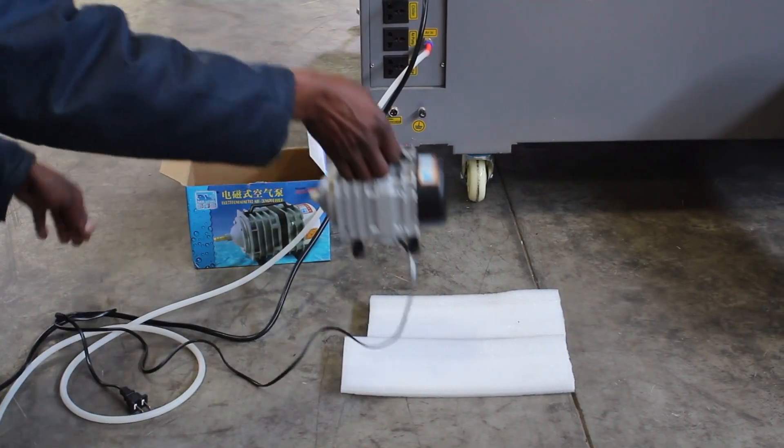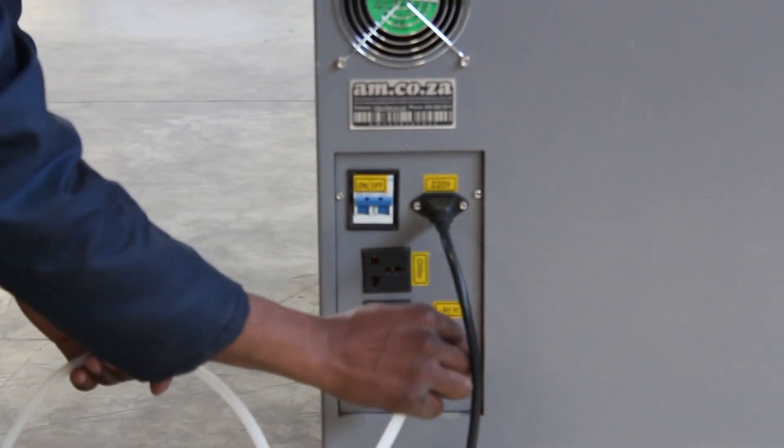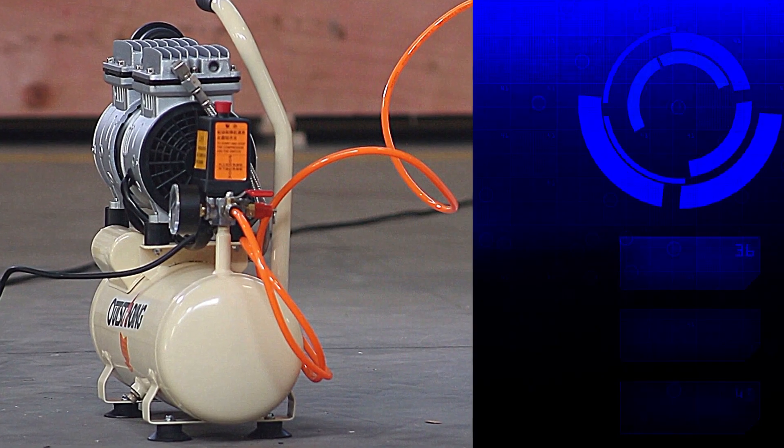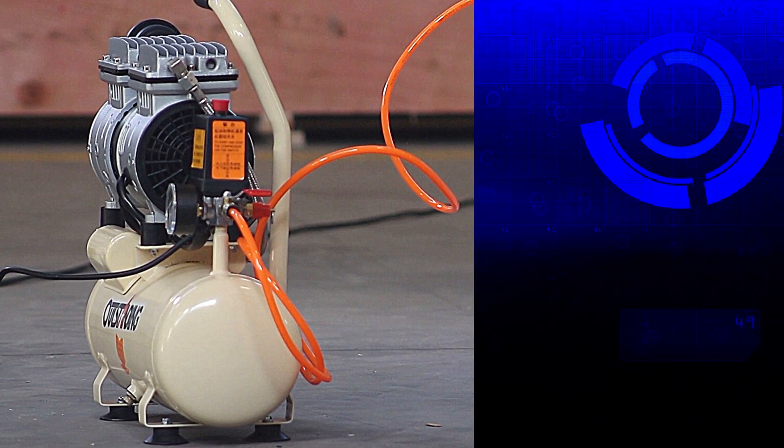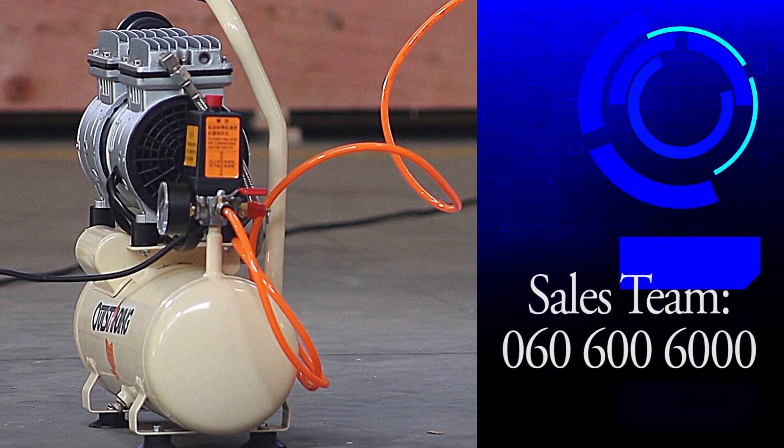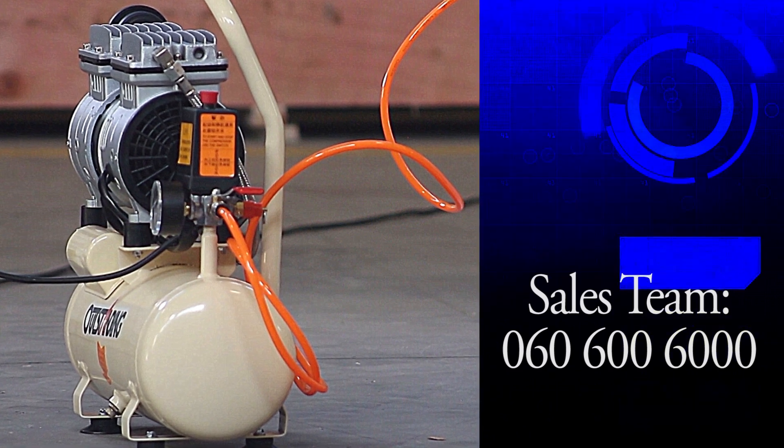This is an air pump connected to the back of the machine to provide air to blow on your workpiece when you are cutting it. There is also a silent air compressor available should you want to cut thicker material than designed. You can contact our sales team on 060 600 6000 for more information about this.